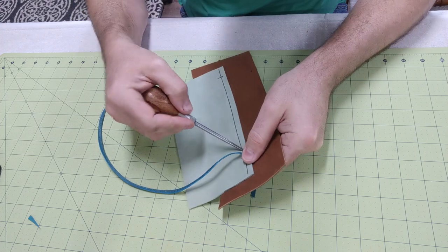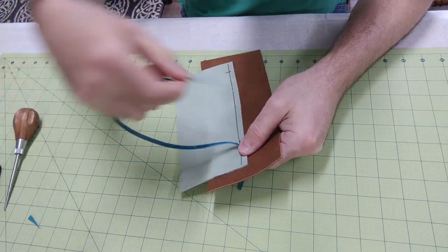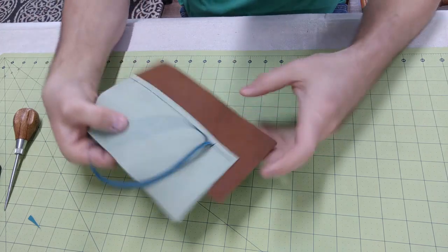Now from the top side take your scratch awl and open up the next hole. Then loop your lace and run it back down through the hole.